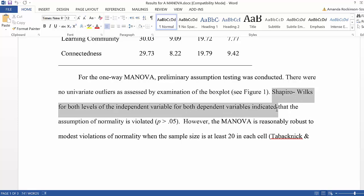for both dependent variables, indicated that the assumption of normality is violated, because the alpha levels or probability values were more than .05.